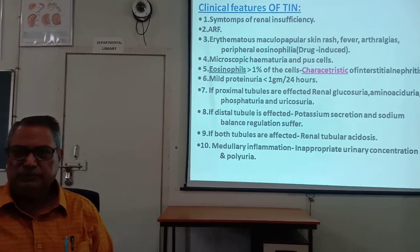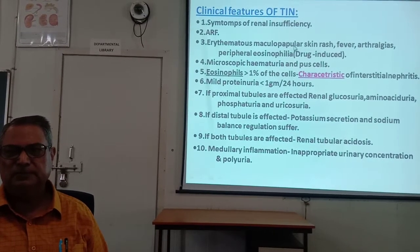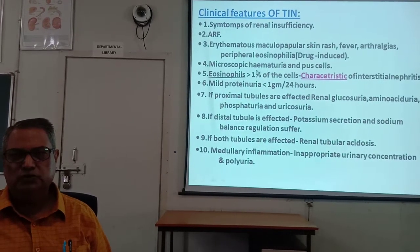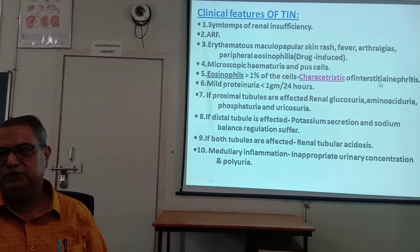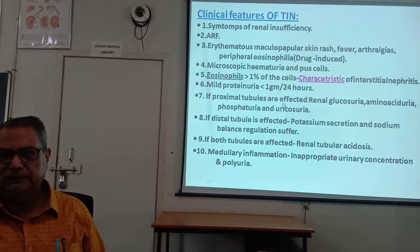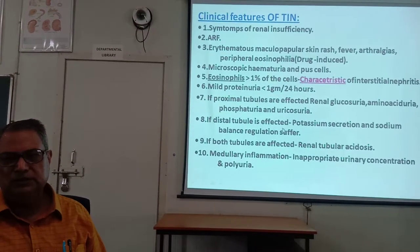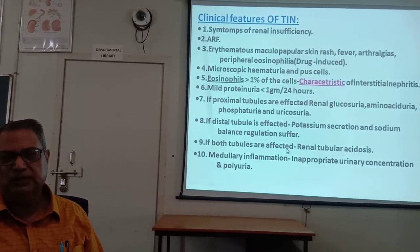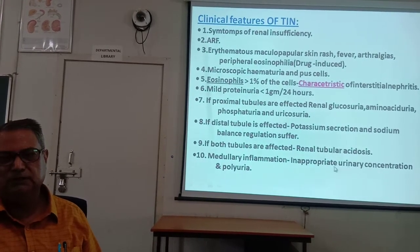Clinical features of tubulo-interstitial nephritis include symptoms of renal insufficiency, acute renal failure, erythematous maculopapular skin rash, fever, arthralgia, and peripheral eosinophilia (drug-induced). Urinalysis shows hematuria, pus cells, and eosinophiluria of more than 1%, which is characteristic of drug-induced interstitial nephritis. Mild proteinuria is also seen. If proximal tubules are affected: renal glycosuria, aminoaciduria, and uricosuria. If distal tubules are affected: impaired potassium secretion and sodium balance regulation. If both tubules are affected: renal tubular acidosis. Medullary inflammation causes inappropriate urinary concentration and polyuria.